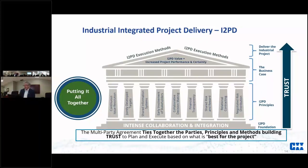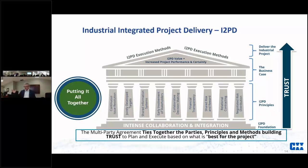As we put it together, we were looking for a metaphor. The metaphor was that of the Parthenon — probably one of the best examples of design optimization and construction risk management. That's a lot of heavy stones layered on top of each other, and the outcome was perfect. Each of the pillars represents the I2PD principles. The foundation is intense collaboration and integration using enough of the collaboration and integration methods to get to that success ratio we're talking about.